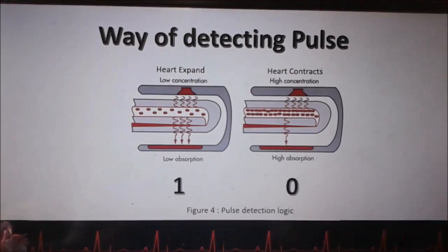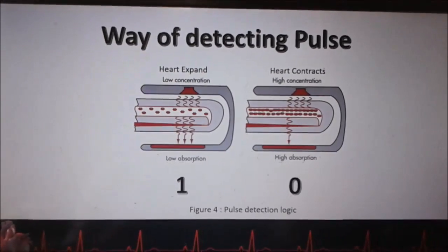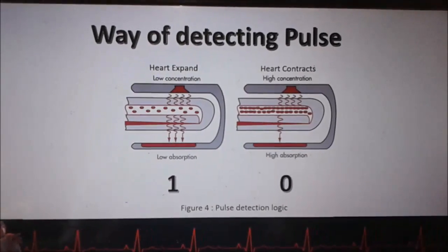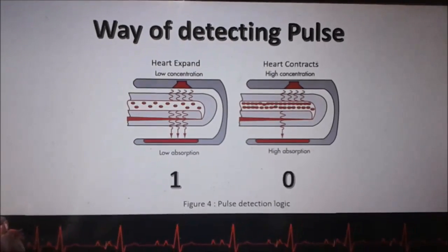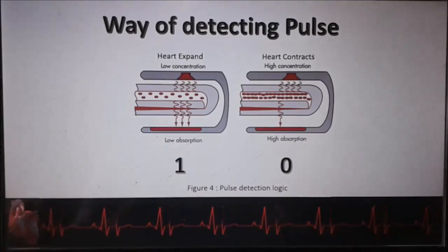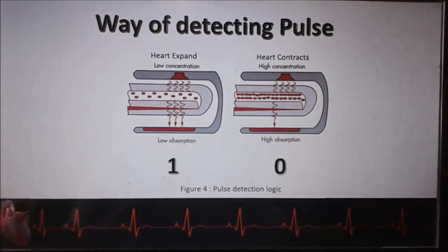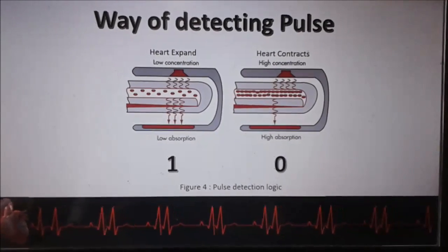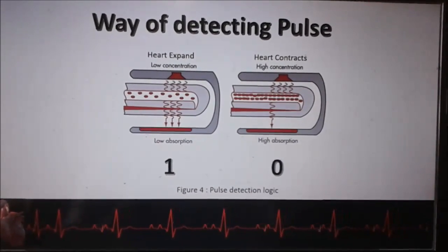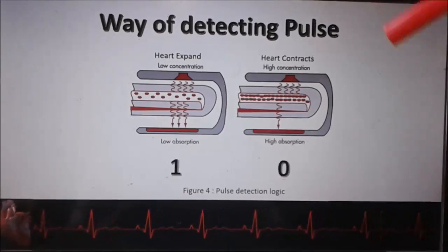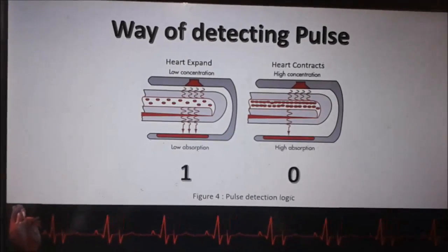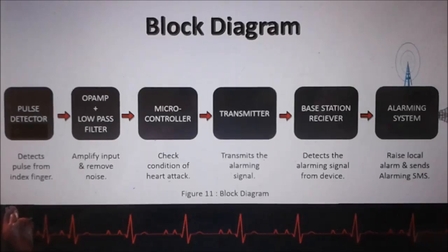Why do we need the heartbeat? We want to know whether you are in a state of heart attack or not. We take the case that if your heartbeat is below 60 or above 100, that is considered a heart attack condition. By this way we detect your heartbeat and further processing is done by the circuit.